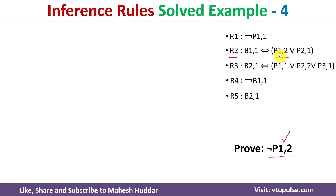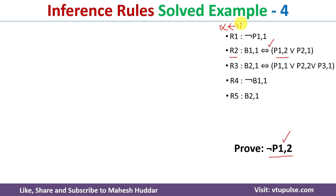When we start with R2, there is a biconditional present. We need to remove this biconditional because we are expecting negation of P12 as the conclusion. So what we do is apply biconditional elimination to remove it.